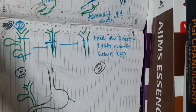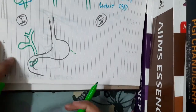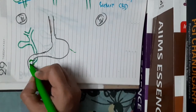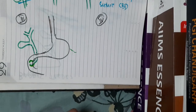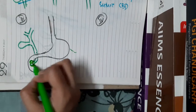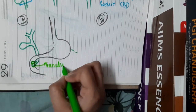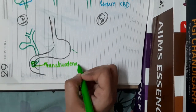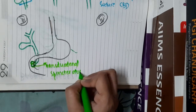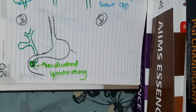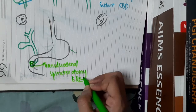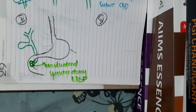For Type 3, which has intraduodenal dilatation of the common bile duct, the treatment is transduodenal sphincterotomy — an incision is given over the intraduodenal segment to help drainage of the contents. This is performed via endoscopic retrograde cholangiopancreatography (ERCP).